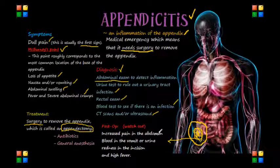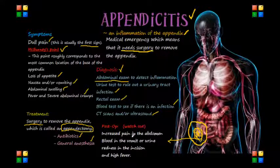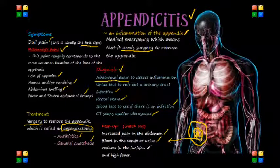With appendectomy, antibiotics are given before the procedure to fight possible peritonitis or other infection, and general anesthesia would usually be given. Nowadays, the appendix is usually removed through laparoscopy, which is just a four-inch incision done in the stomach. After the appendectomy post-op, as the nurse, you've got to make sure to watch the patient for signs of increased pain in the abdomen, blood in the vomit or in the urine, or redness in the incision area, or a high fever, because any of these signs can trigger a major issue.